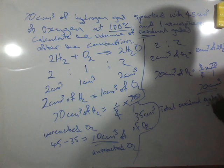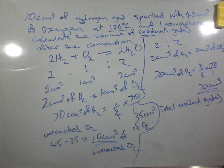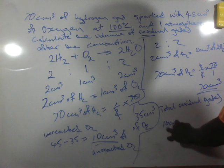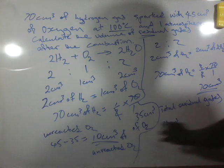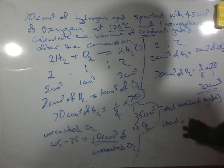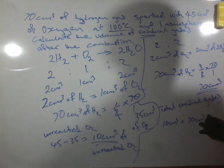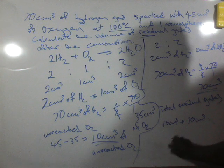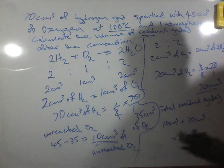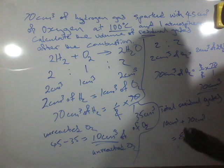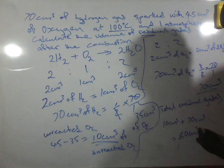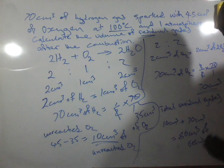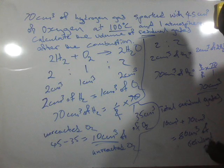The total residual gases will then be 10 cm³ of oxygen plus 70 cm³ of water vapor. That will give us 80 cm³ of residual gases.